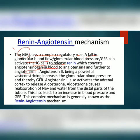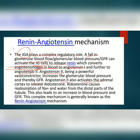Renin converts angiotensinogen in the blood to angiotensin 1 and further to angiotensin 2. Angiotensin 2, being a powerful vasoconstrictor, increases the glomerular blood pressure and thereby the GFR. Angiotensin 2 also activates the adrenal cortex to release aldosterone, which causes reabsorption of sodium and water from the distal part of the tubule, leading to an increase in blood pressure and GFR.